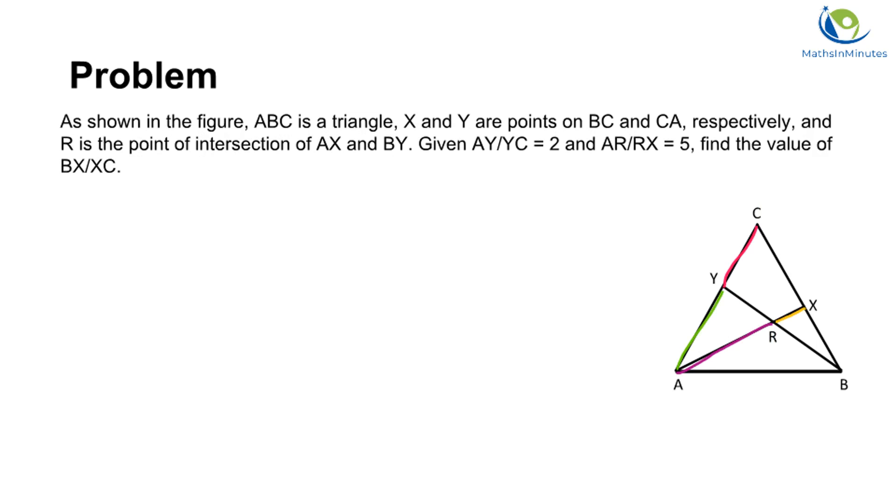In this problem, we are given two ratios: AY over YC and AR over RX. The two ratios contain 4 segments. We can see that these 4 segments are on the sides of triangle CAX.